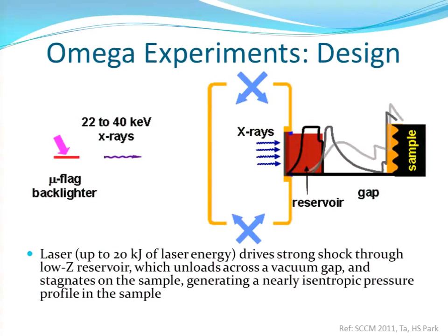This is the reservoir gap sample configuration, designed by the group at Livermore years before I arrived. Basically, this is a hohlraum — the laser comes through, then we have x-rays that come through, and it drives a strong shock through this low-Z reservoir. It unloads across this vacuum gap, and produces a pressure profile right in front of the sample.